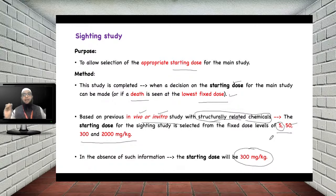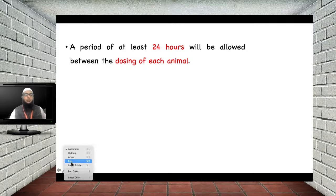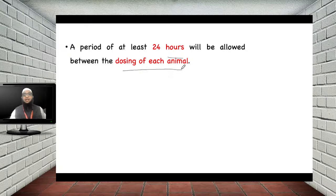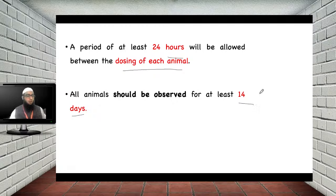In all types of studies — sighting, main, or limit test — animals are observed for at least 24 hours between dosing. The observation period continues for at least 14 days, with animals monitored once per day for signs and symptoms of toxicity or death.